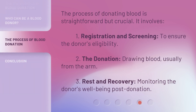The process of donating blood is straightforward but crucial. It involves: 1. Registration and screening, to ensure the donor's eligibility. 2. The donation — drawing blood, usually from the arm. 3. Rest and recovery — monitoring the donor's well-being post-donation.